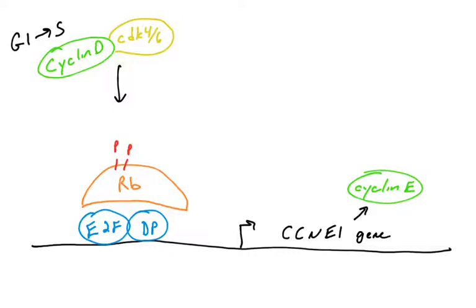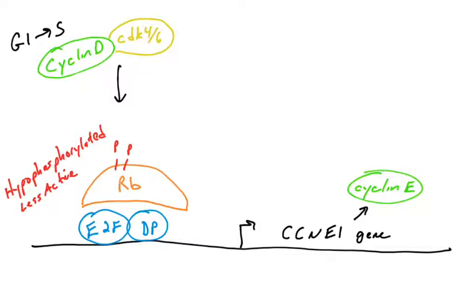RB is a transcriptional repressor, and phosphorylation can alter the activity of proteins. In this instance, the RB protein, when it becomes phosphorylated, becomes less active — shown here as hypophosphorylated. It turns out RB has over a dozen sites of phosphorylation and can be phosphorylated at a low or high level. Here we're phosphorylating at a low level, which changes its 3D conformation, making it a less effective repressor.